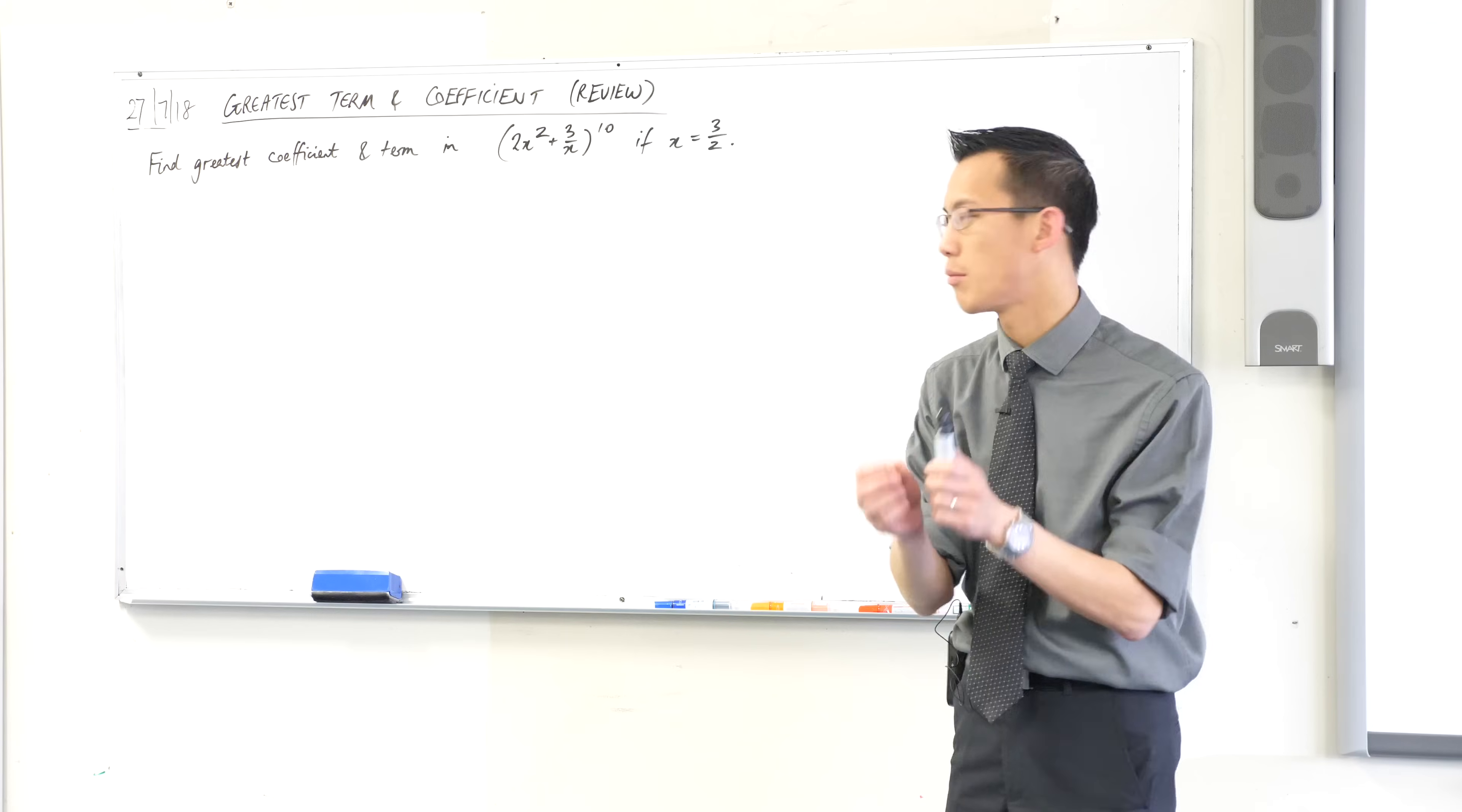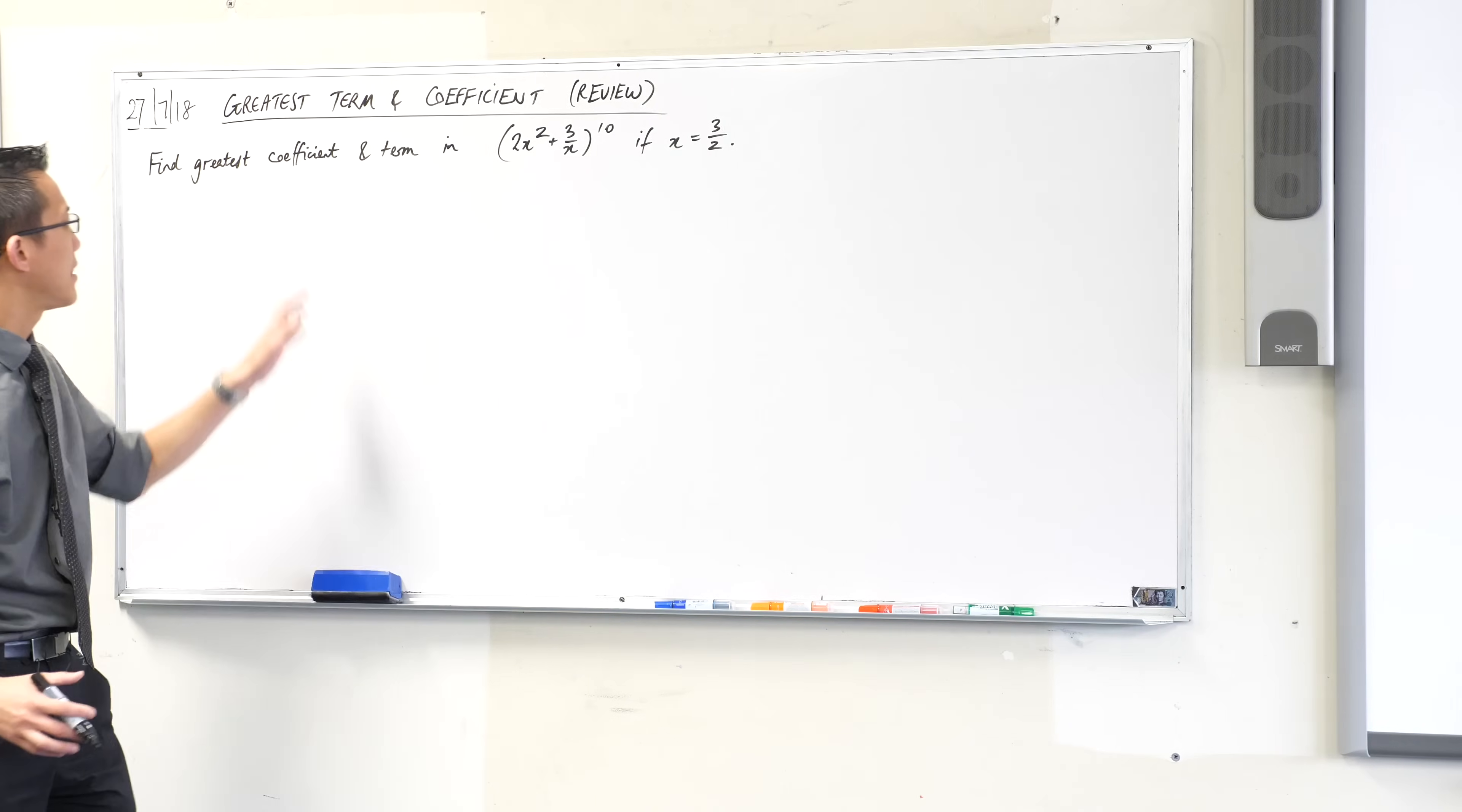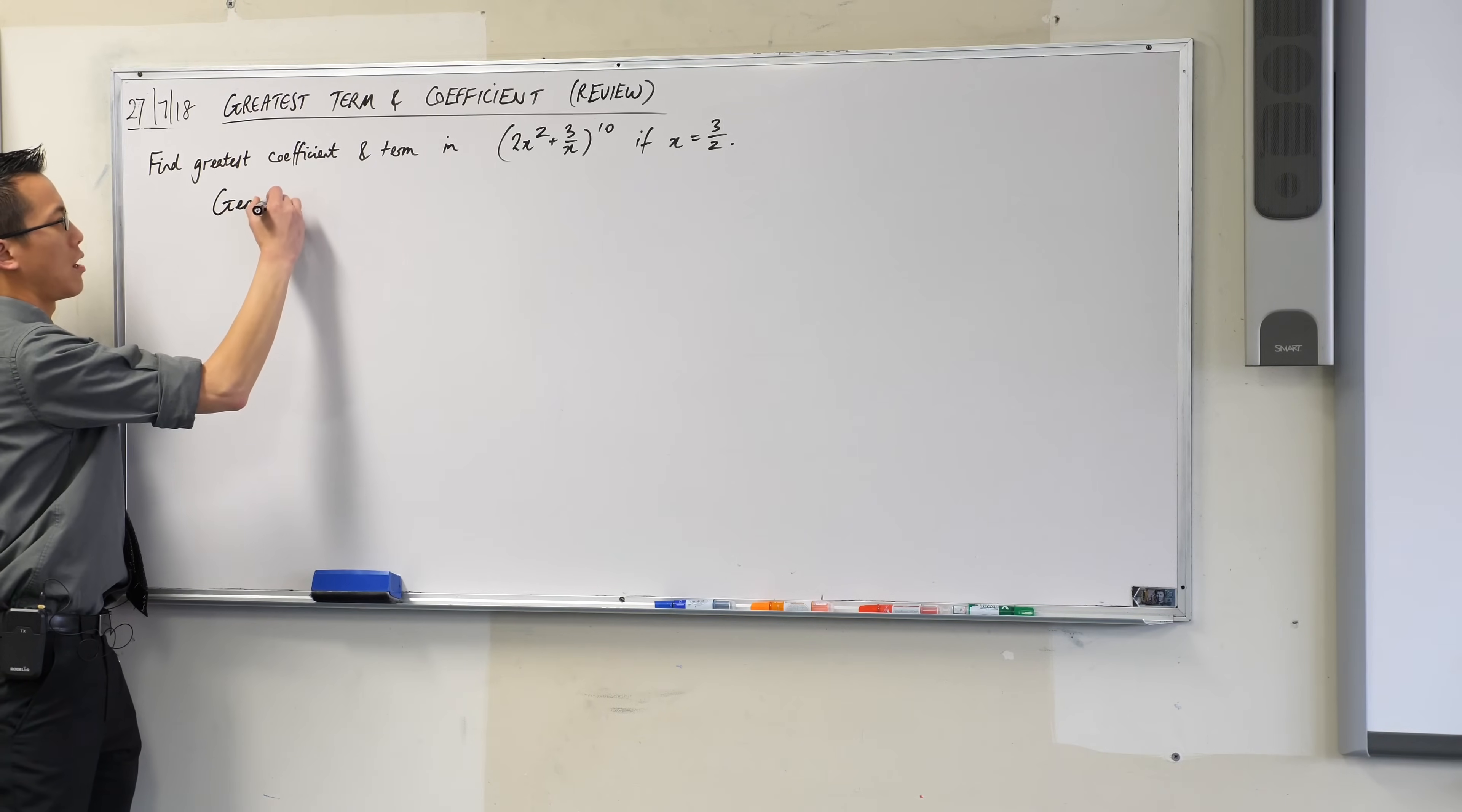Now it's that distinction that we really want to nail down, so I'm going to try and make it as clear as possible and re-emphasize to you that these objects are different and how they are different. So let's begin. In order to find the greatest coefficient or the greatest term, you need to know what each individual term looks like so you can compare them in some way. So where I always begin is by writing the general term.